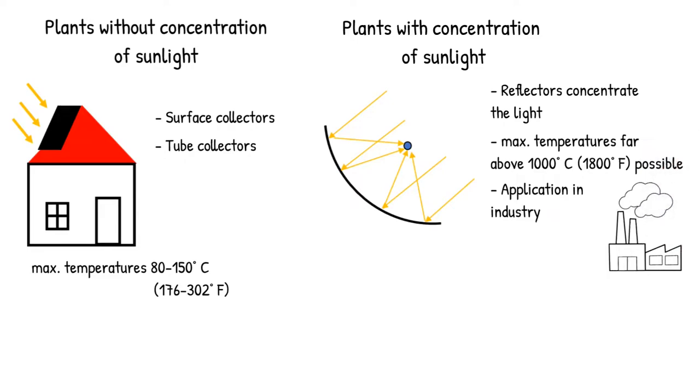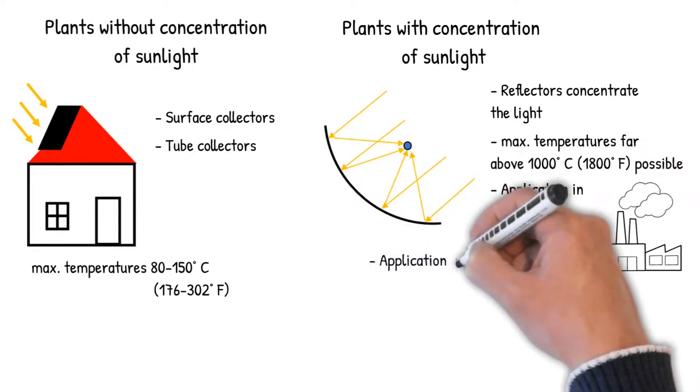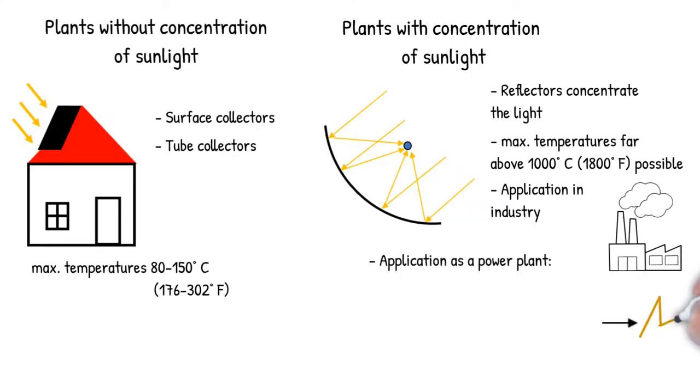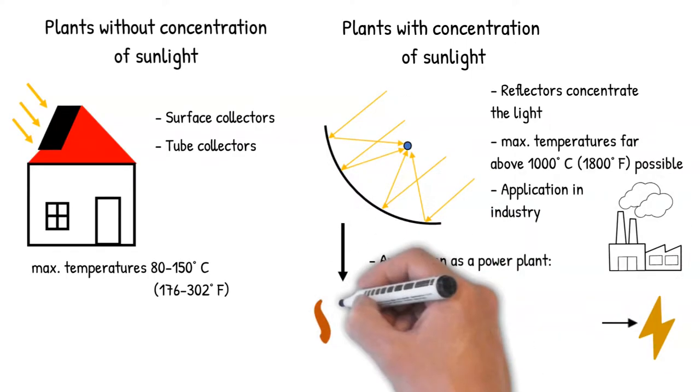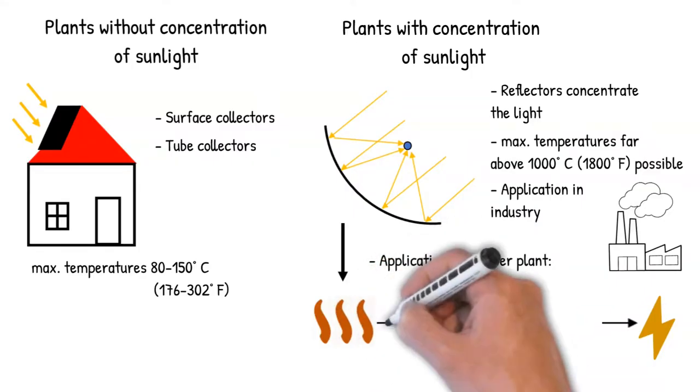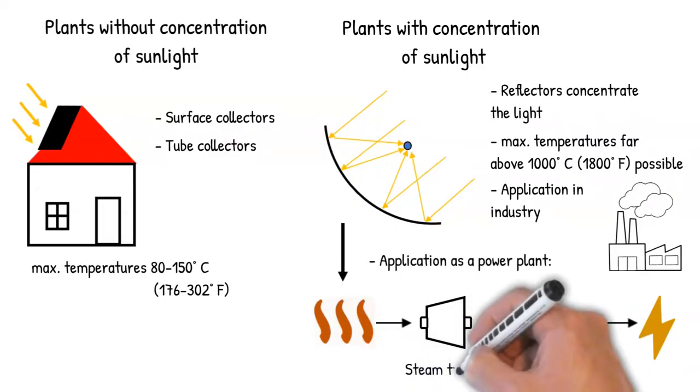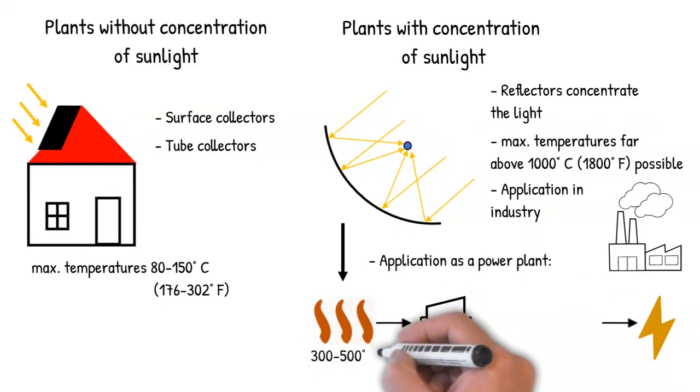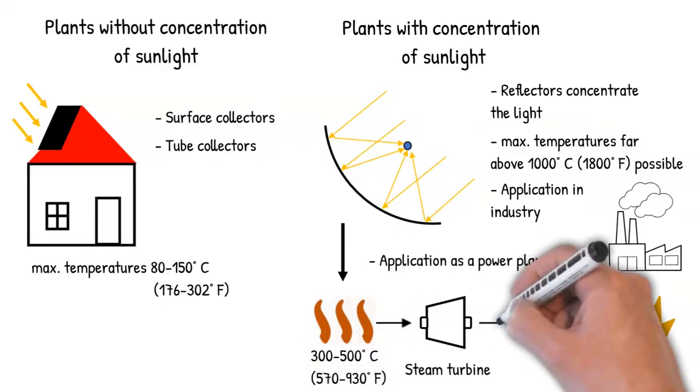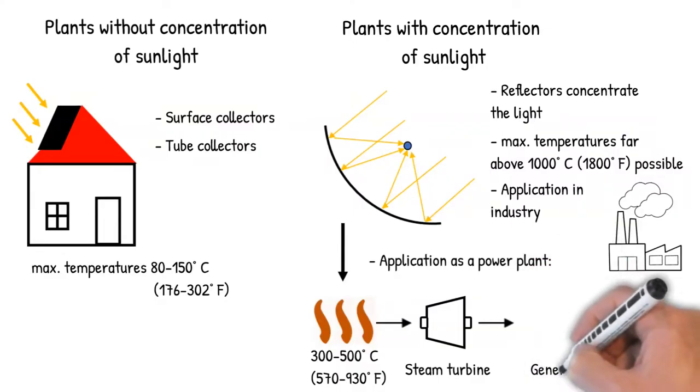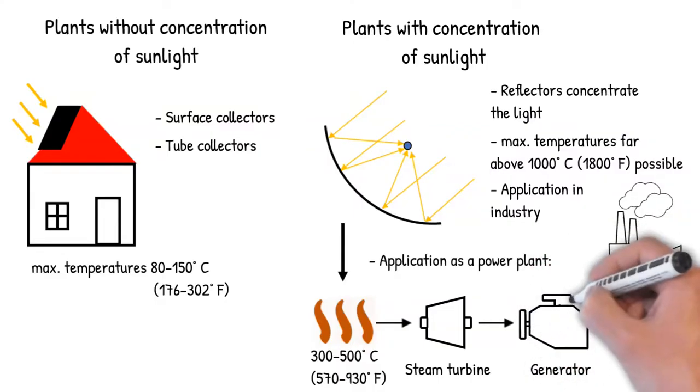A wide application of these collectors are solar thermal power plants. Like PV systems, these generate electricity from sunlight, not directly, but via heat. In most cases, a steam turbine is used to generate kinetic energy from water that is several hundred degrees warm. This turbine is then connected to a generator that converts the kinetic energy into electricity.